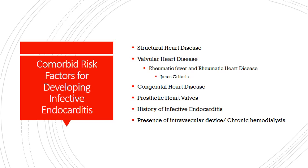The comorbid risk factors are things the patient already has that contribute to the likelihood of developing infective endocarditis. The first is structural heart disease — in these patients, you'll want to treat them in advance of any invasive procedure, including routine dental work, to avoid IE developing. Valvular heart disease also represents a risk, including patients who previously had rheumatic fever or rheumatic heart disease, mitral valve prolapse, mitral regurgitation, aortic valve disease, and any other valvular abnormalities. An abnormal valve is much more likely to get infected and cause IE than a native or normal valve.